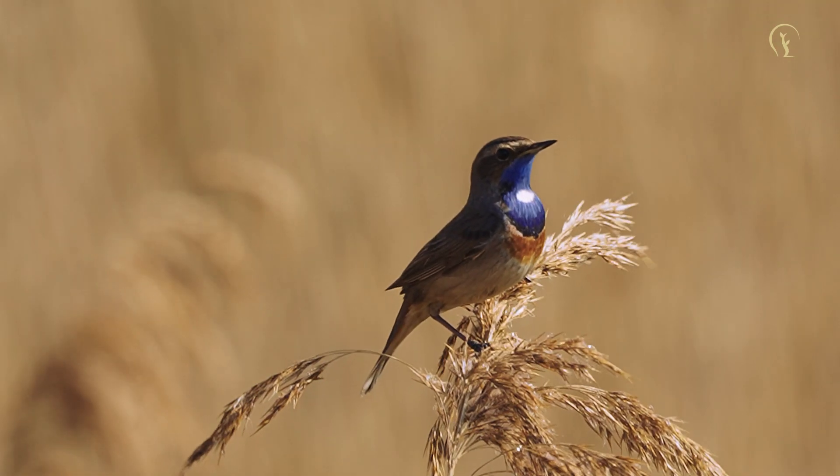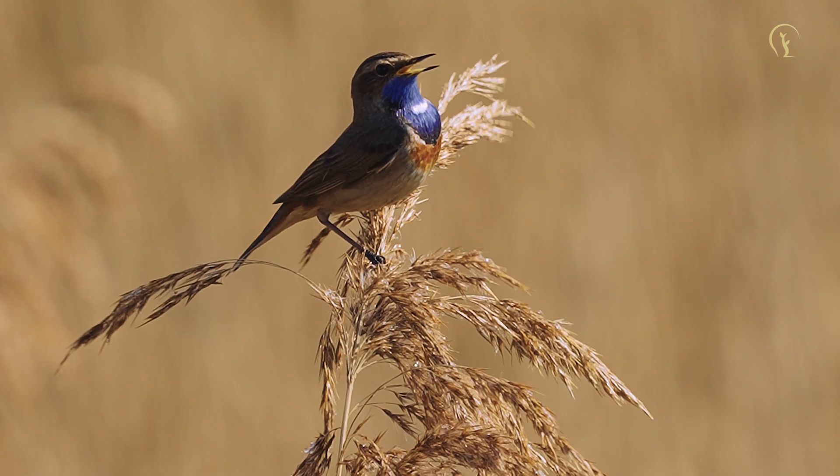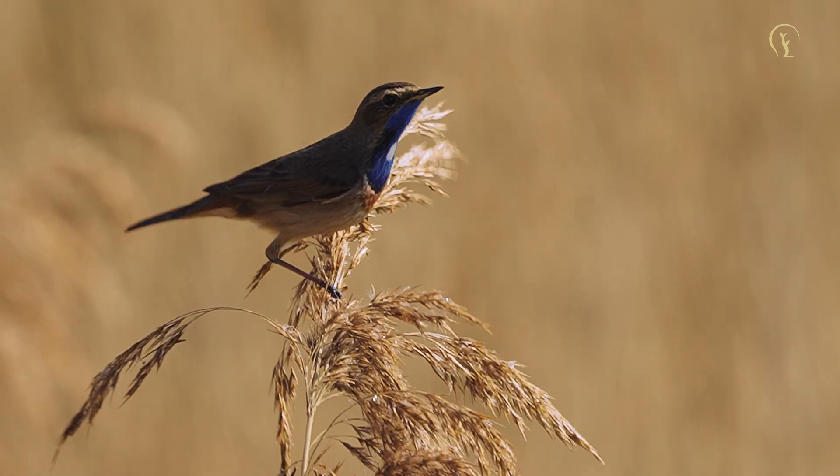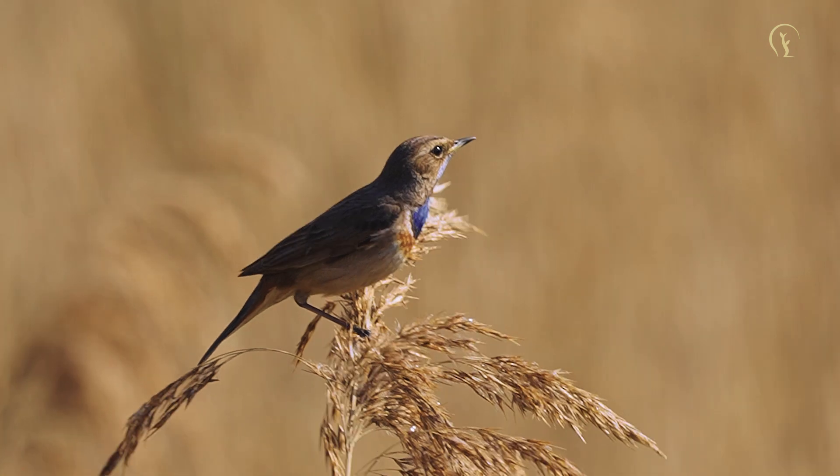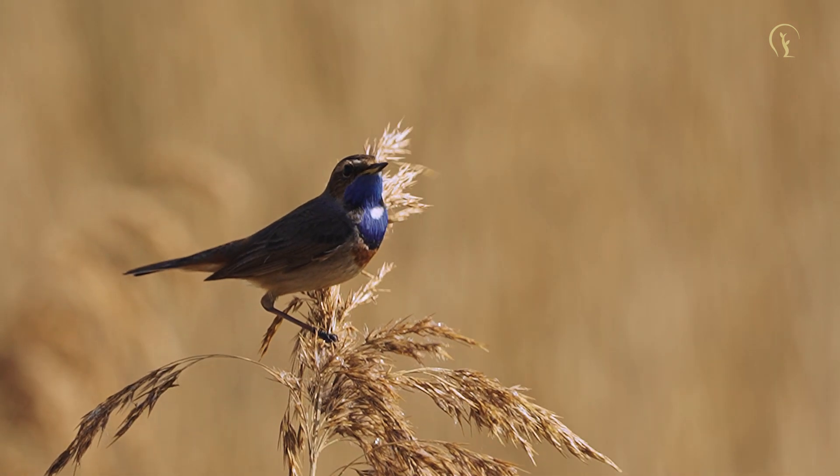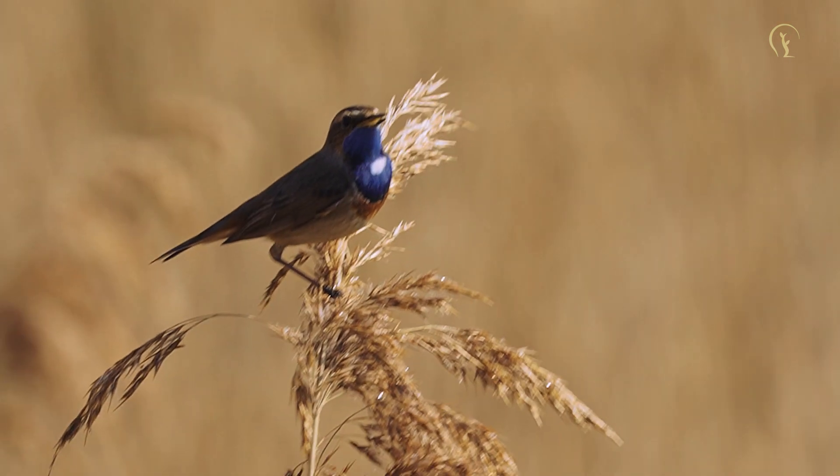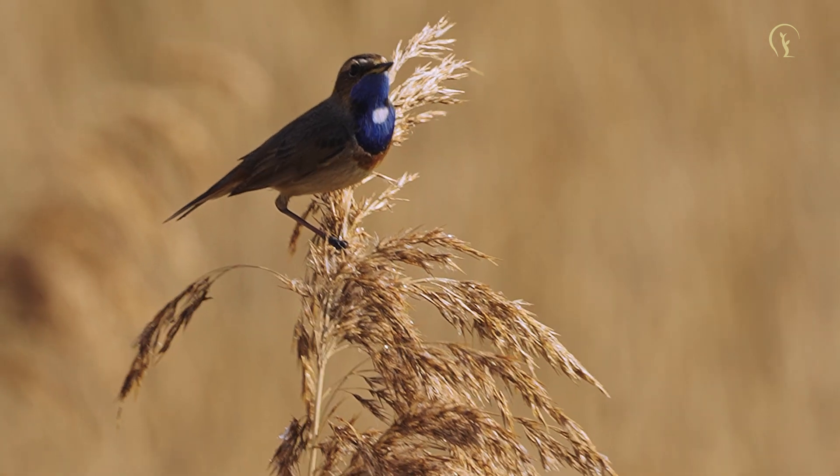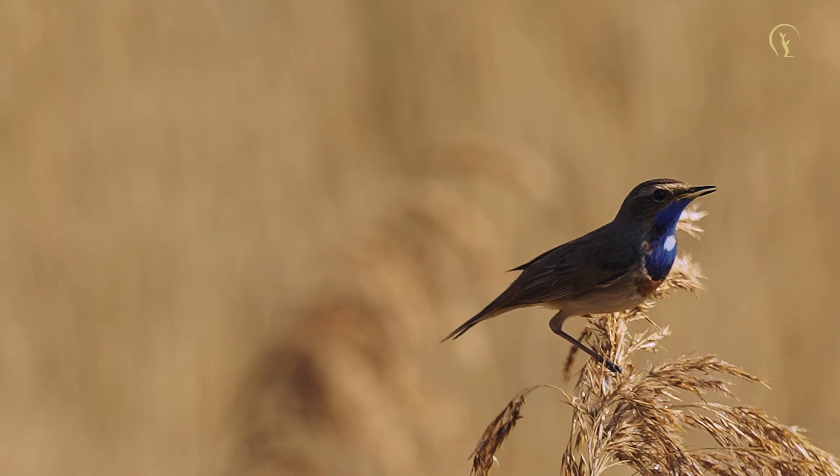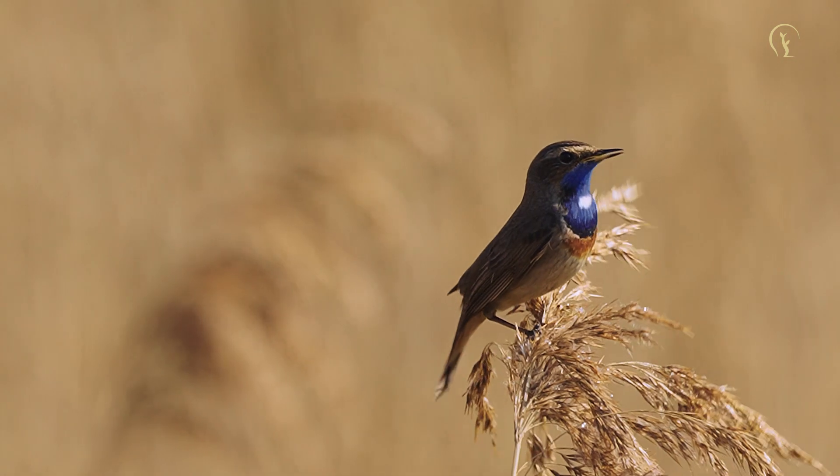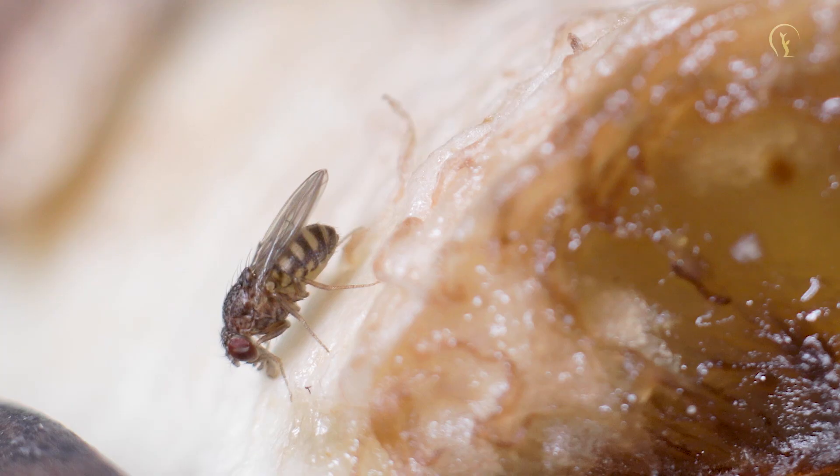Researchers have identified a specific type of cryptochrome, Cry4, particularly Cry4a, as a strong candidate for magnetoreception. Studies on migratory birds have revealed that their version of Cry4 is particularly sensitive to magnetic fields, suggesting that natural selection has fine-tuned their cryptochrome proteins for long-distance navigation.